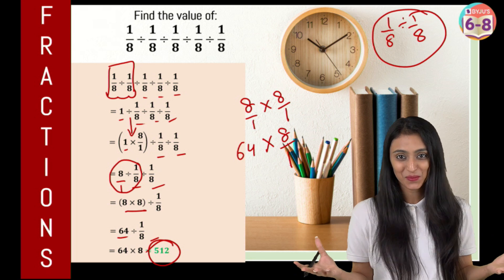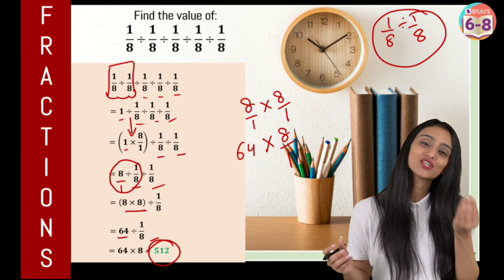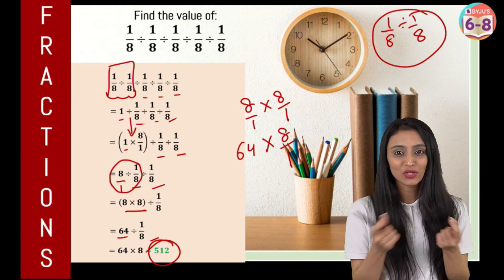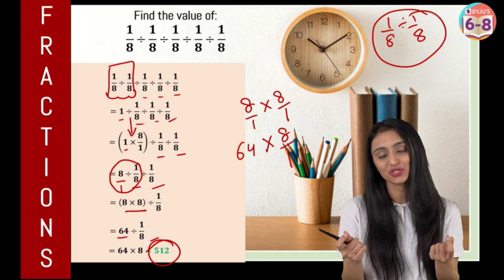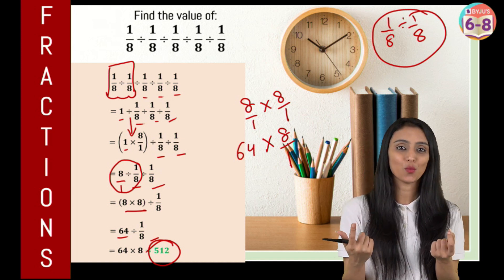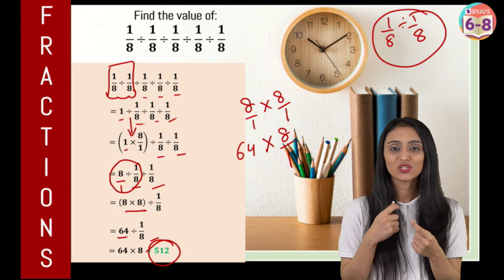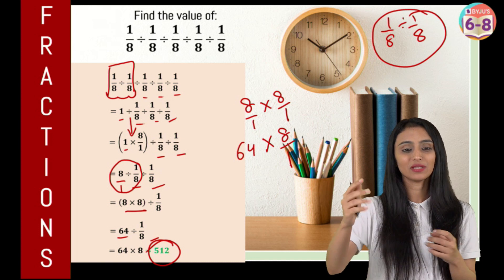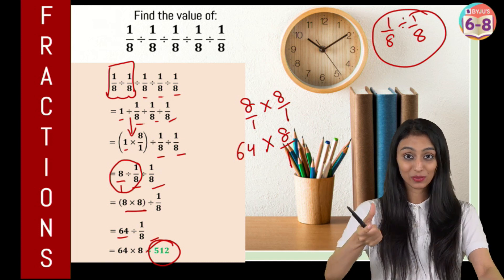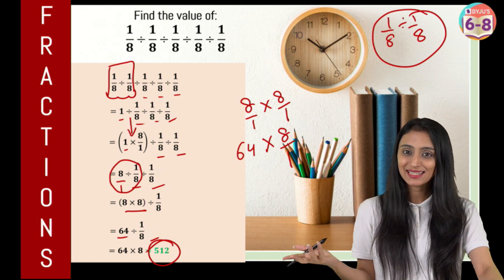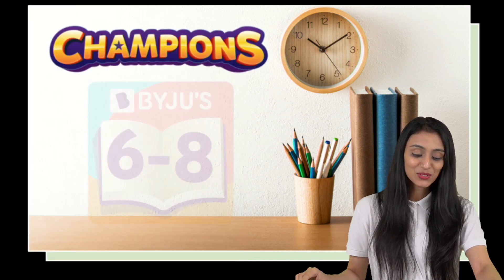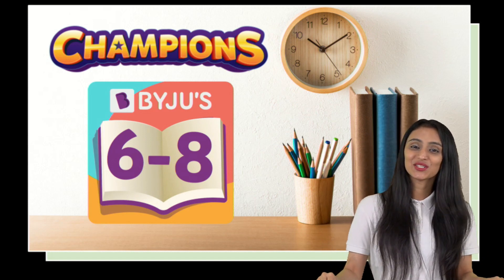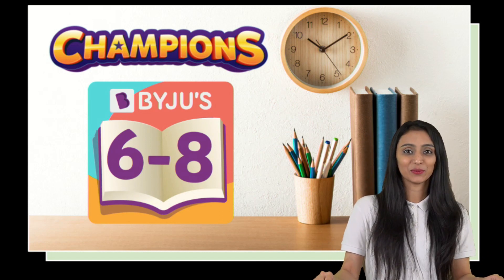See how simple it was! We are just using the basic logic that when you divide two same numbers together, you get 1. When you change the division symbol to multiplication, the number written after that gets flipped — we take the reciprocal of that. That's it. Do leave a comment for me in the comment section — how did you like this video?